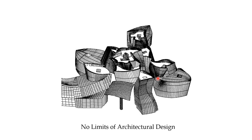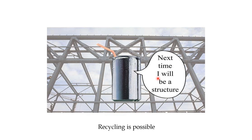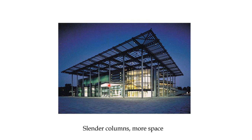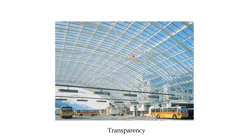There is no limit to architectural design — architects can make any shape for creativity and to inspire their clients. Another advantage is that steel is recyclable: after a structure's life, the material can be recycled and reused. Slender columns give more usable space. The structure is lightweight in its upper portion so lighter members can cover the design requirements. Transparency is also possible — structural glass can be provided between steel members to allow light and visual openness.